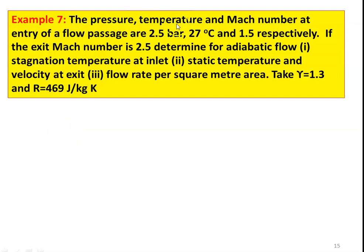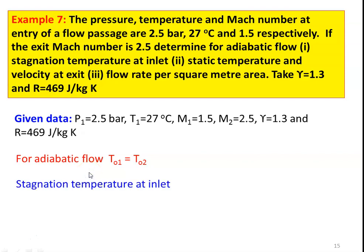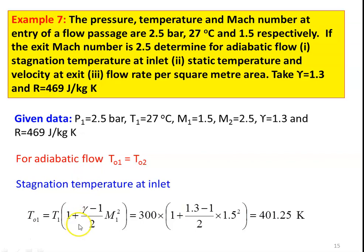Example 7: The pressure, temperature, and Mach number at the entry of a flow passage are 2.5 bar, 27°C (300 K), and M₁ = 1.5. The exit Mach number is M₂ = 2.5. Determine for adiabatic flow: stagnation temperature at inlet, static temperature and velocity at exit, and flow rate per square meter area. Take γ = 1.3 and R = 469 J/kg·K. For adiabatic flow T₀₁ = T₀₂. Stagnation temperature at inlet: T₀₁ = T₁ × [1 + (γ-1)/2 × M₁²] = 300 × [1 + (0.3/2) × 1.5²] = 401.25 K.